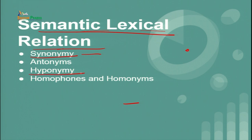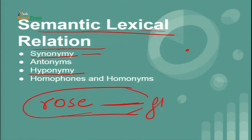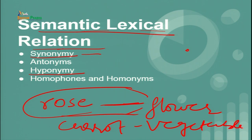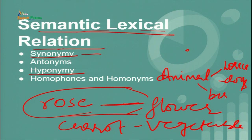There is another concept: hyponymy. When the meaning of one form is included in the meaning of another, the relationship is described as hyponymy. For example, 'rose' is a kind of flower, 'carrot' is a kind of vegetable, and under 'animal' you have horses, dogs, birds, etc. The meanings are inclusive — you find one meaning within the other.